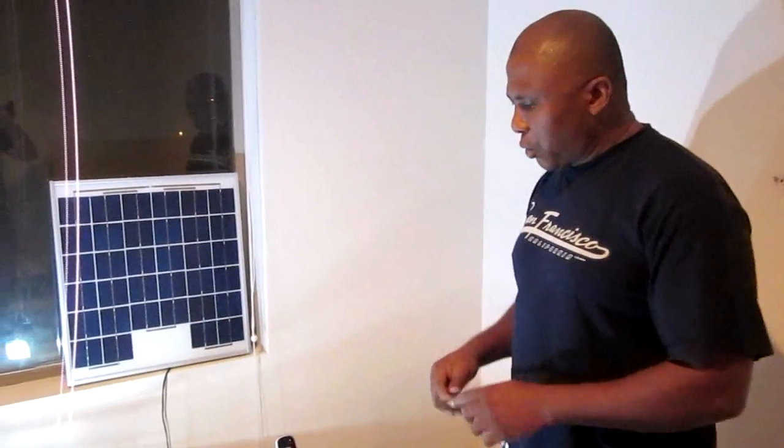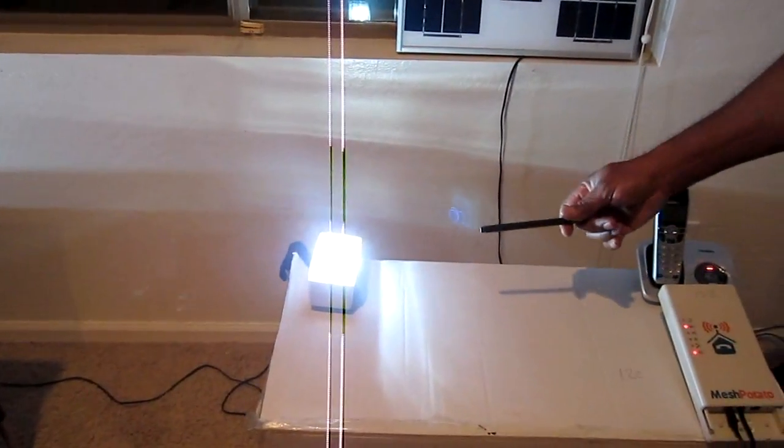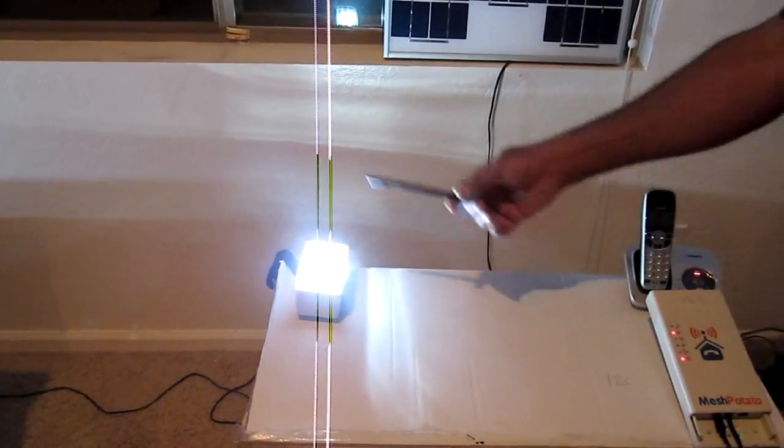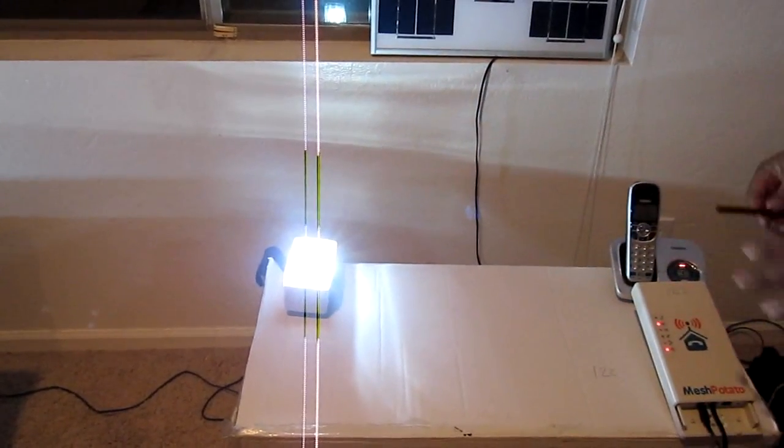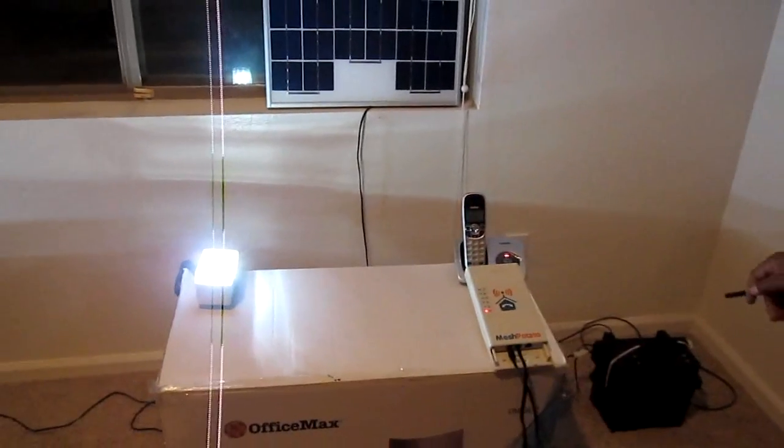So I want to do the demonstration. But before I do that, I want to show you. This is the light, which I'm going to turn off the light. Let me just turn on the light briefly. And then you're going to see how bright these two lights are. This is powered by the solar. And the battery panel and the battery is right down there.